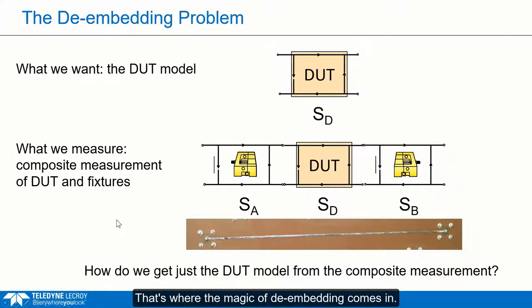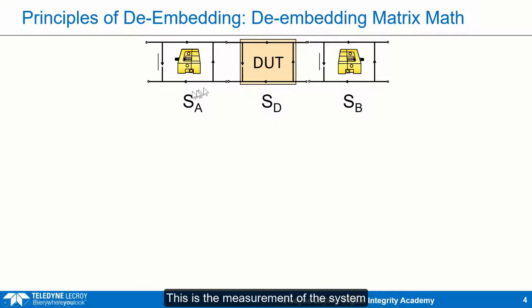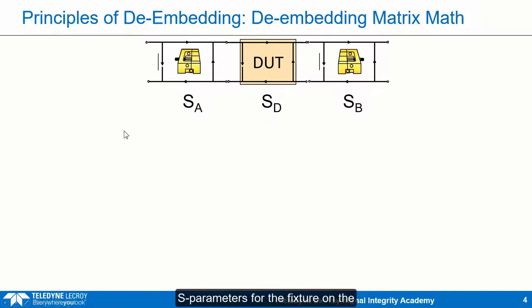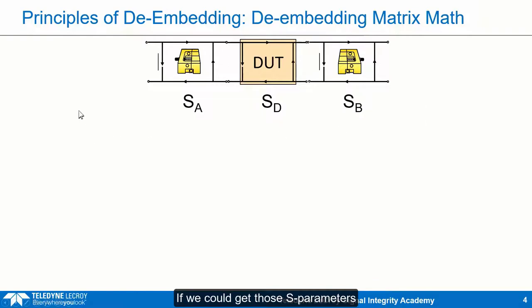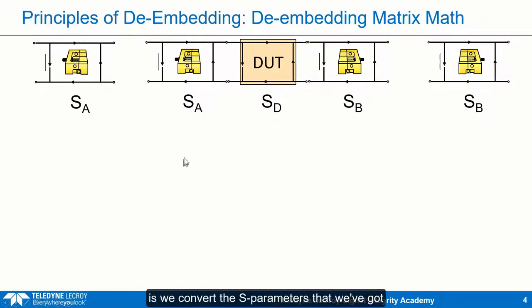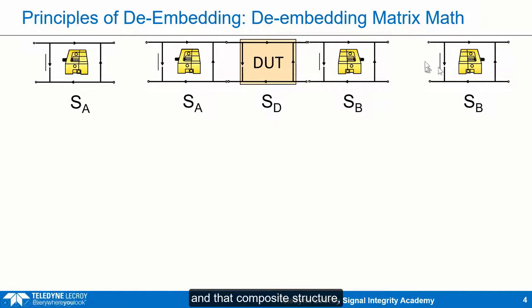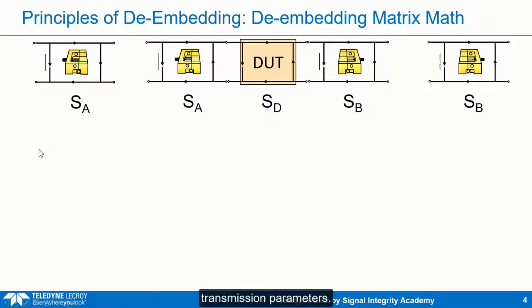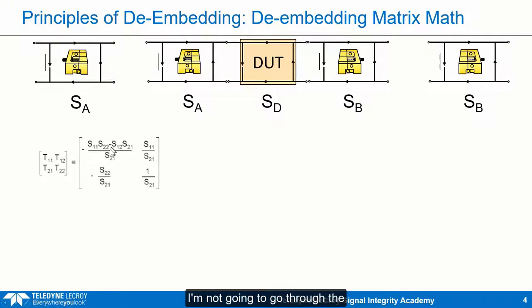That's where the magic of de-embedding comes in. Here is that composite structure — the measurement of the system with the device under test with fixtures on either side. If somehow we could get the S-parameters for the fixture on the left-hand side and the fixture on the right-hand side, then we can do a little bit of matrix math to de-embed just the device we care about. The secret is we convert the S-parameters — the S-parameters of the fixture on the left, the fixture on the right, and the composite structure — into what are sometimes referred to as T-parameters or transmission parameters.